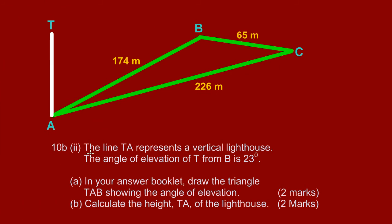In question 10b part 2, they have stated the line TA represents a vertical lighthouse. Here we have our vertical line TA, that's the lighthouse. They state here that the angle of elevation of T from B is 23 degrees, so the angle of elevation of T from the point B is 23 degrees.